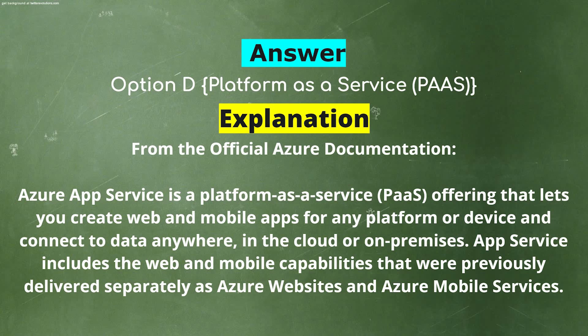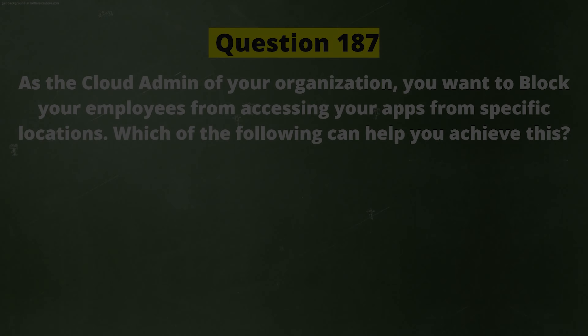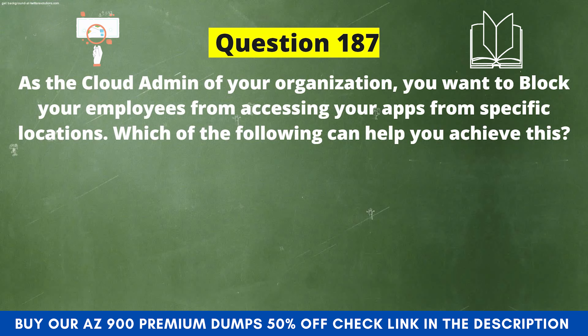Explanation from the official Azure documentation: Azure App Service is a Platform as a Service offering that lets you create web and mobile apps for any platform or device and connect to data anywhere in the cloud or on-premises. App Service includes the web and mobile capabilities that were previously delivered separately as Azure Websites and Azure Mobile Services.